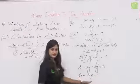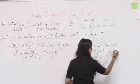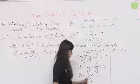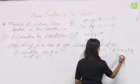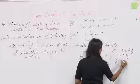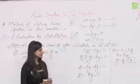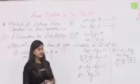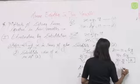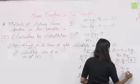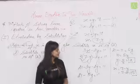11 को इधर ले जाएंगे: 21 − 11 = 5y, so 10 = 5y, so y = 10/5 = 2। तो y की value मिल गई: 2। अब x की value निकालेंगे: x = 7 − y = 7 − 2 = 5। तो x = 5 और y = 2।